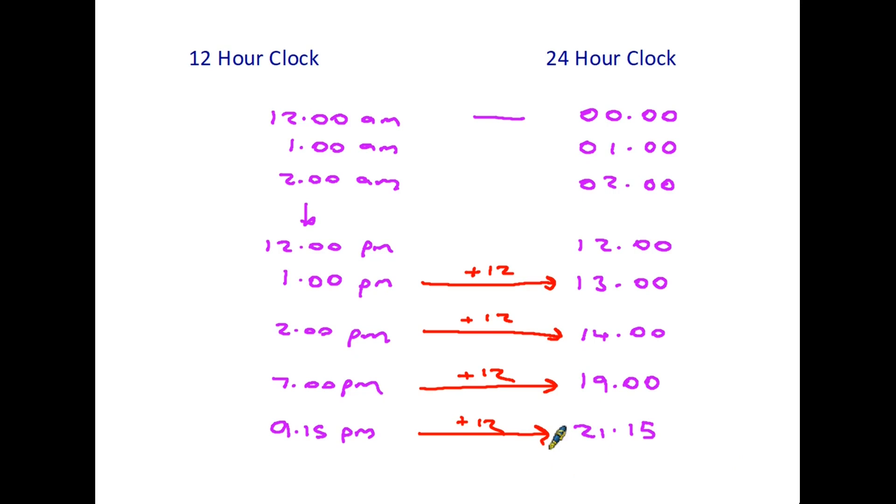So of course, if we're going to convert in the opposite direction, then we do the opposite sum. So 1300, we would subtract 12. 1400, we subtract 12. And it works for every time. So to go from 12 hour clock to 24 hour clock, we add 12 hours. To go from 24 hour clock to 12 hour clock, we take away 12 hours. But only for the times after 12 o'clock midday. The morning times remain the same. They look a little different, they don't have the AM. But after 12, we have to add or take away 12 hours.